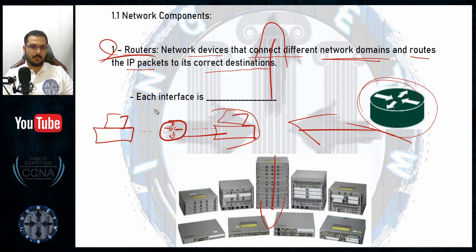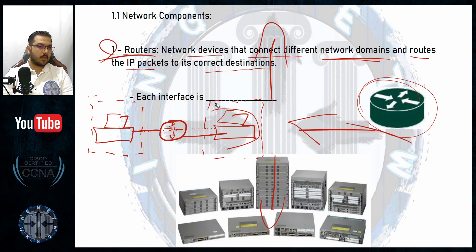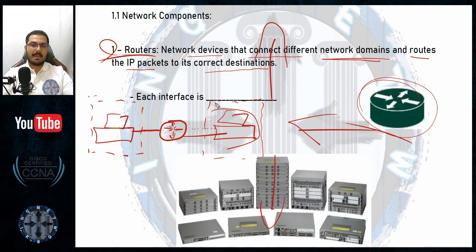The router device is a network device that connects you — when you are in something called a network domain — to another person connected to a different network domain. A domain means a network — it's an area or radius. For example, if you are sitting in a room, your domain is that room, and whoever is in that room is in your domain.